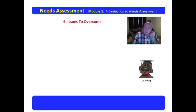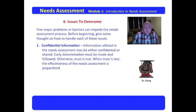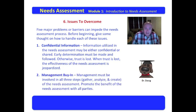The last area to examine is the issues that need to be overcome to deliver a successful needs assessment. There are five major problems or barriers which can impede the process. The first is confidential information — information used in the needs assessment can be confidential, shared, or anonymous, and you must determine its status. If you reveal confidential information outside the appropriate circle, trust is lost and the effectiveness of the needs assessment is jeopardized. You also certainly need management buy-in. Management must be involved in the three steps of gathering, analyzing, and creating. If management is not committed, then you are set up for failure.